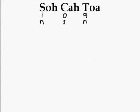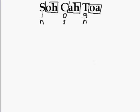So SIN, COS, and TAN — that's what the S, the C, and the T stand for. What are the other letters though? There is an OH, there is an AH, and there is an OA. Well, those are all side lengths: opposite side, hypotenuse side, adjacent side, hypotenuse side, opposite side, adjacent side — three different sides.